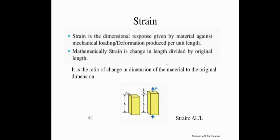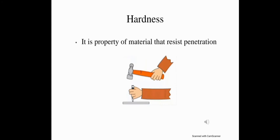Strain is the dimensional response given by a material against mechanical loading — the deformation produced per unit length. Mathematically, strain is change in length divided by original length. The strain formula is ε = ΔL/L, where ΔL is the change in length and L is the original length of the material before applying the force. The next term is hardness — it is the property of a material that resists penetration.